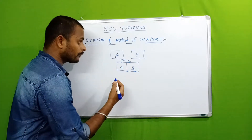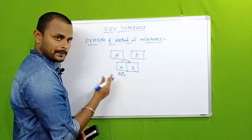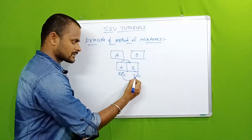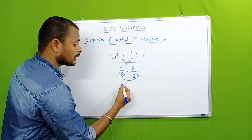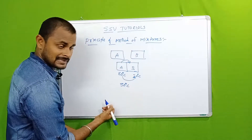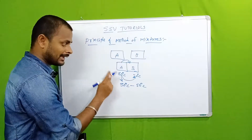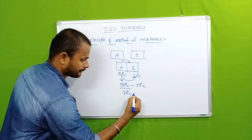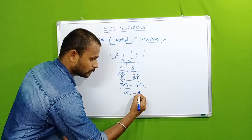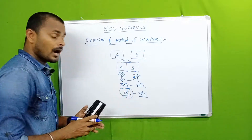According to the principle of method of mixtures, for example, the temperature of A is 80 degrees and the temperature of B is 20 degrees. There is a difference in temperature between both objects, so heat transfers from A to B until both objects reach equal temperature. When A reaches 50 degrees Celsius, B also reaches 50 degrees Celsius. The decrease in temperature of A is 80 minus 50, which is 30 degrees Celsius.